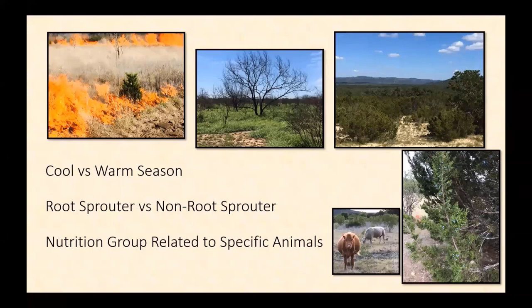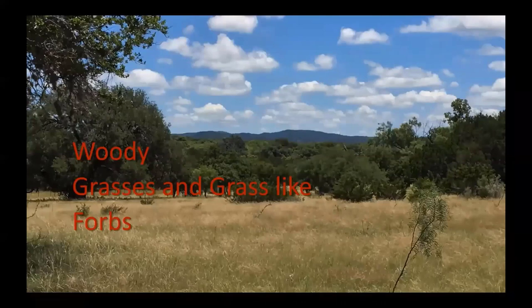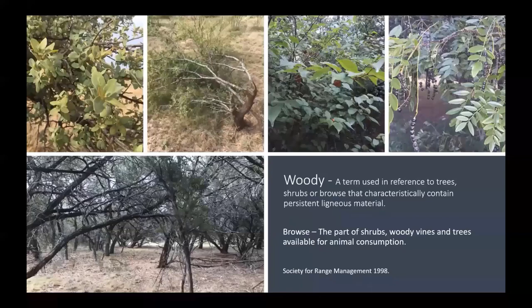Now I'd like to discuss plant grouping based on physical or morphological characteristics. I want to focus on one of the most basic and straightforward grouping systems, which I consider very beneficial for evaluating land for livestock and wildlife production, and also valuable in the plant ID process. This grouping places most plants we encounter into three groups: woody plants, grasses and grass-likes, and forbs.